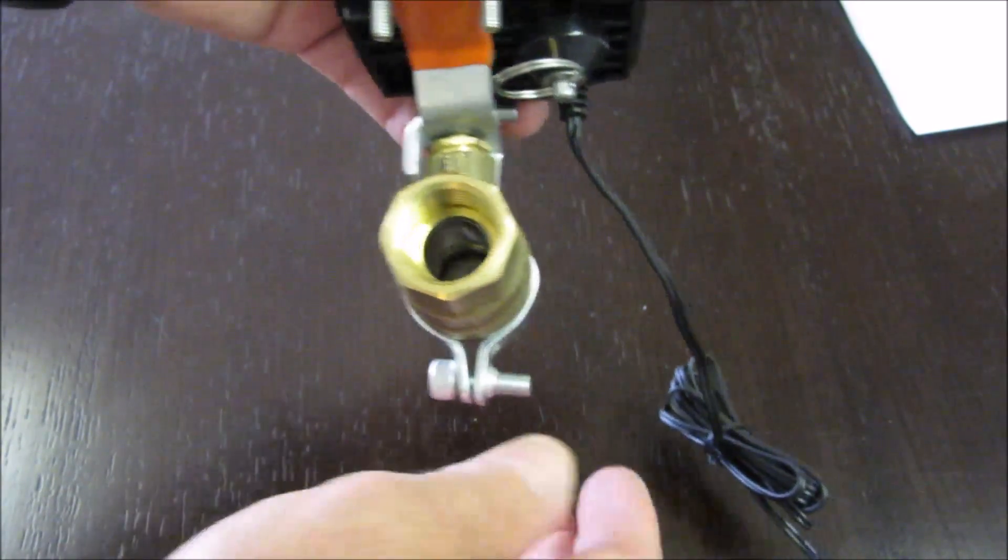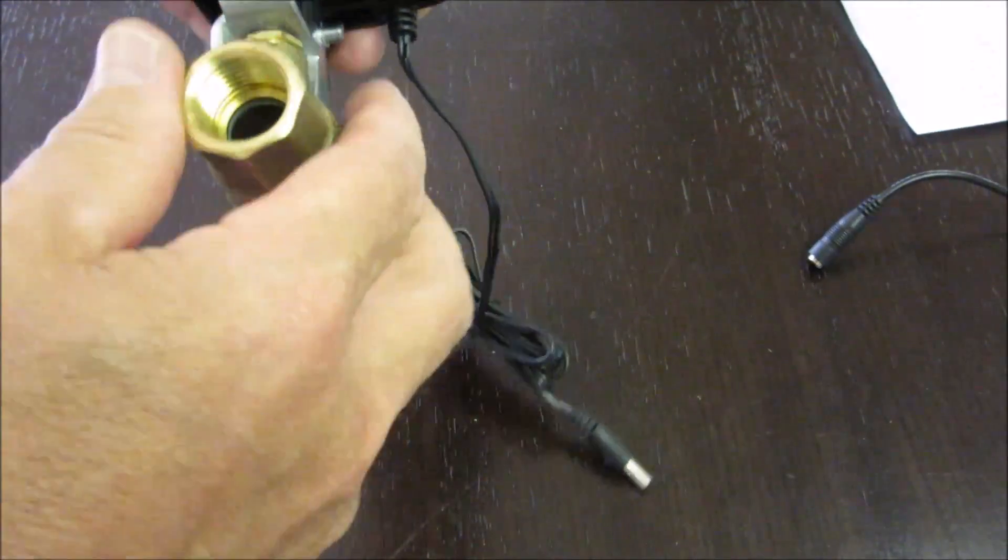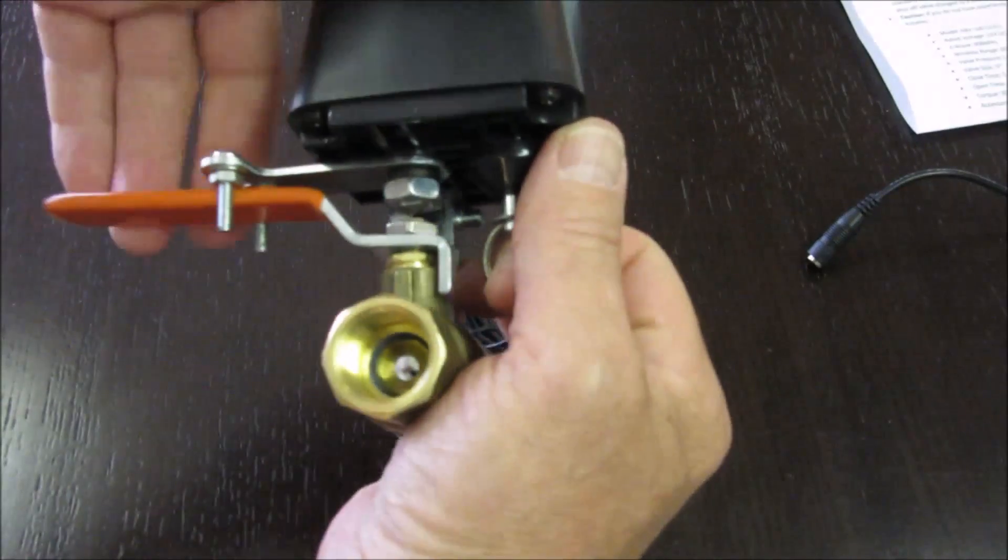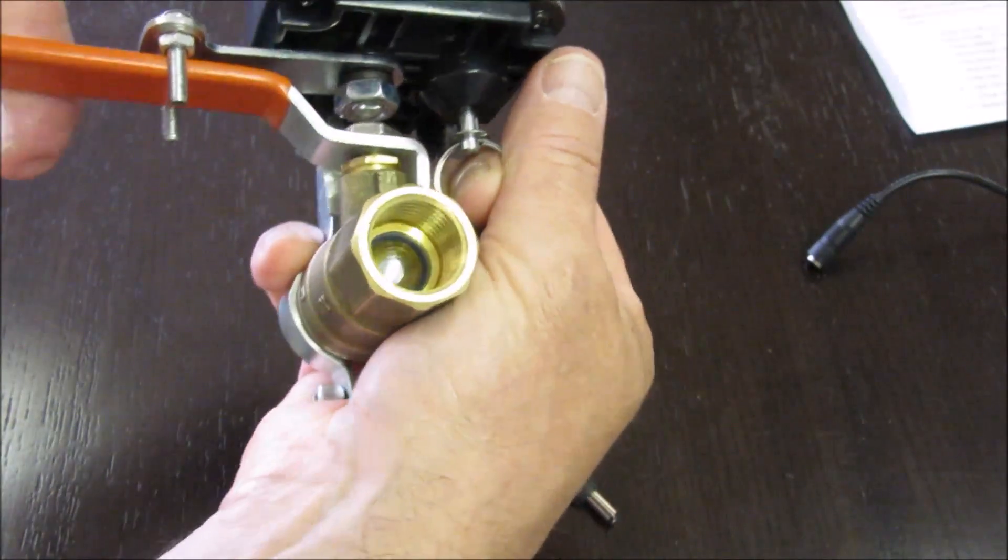If for some reason you lose power and you want to operate it manually, you can just unplug it and pull the clutch. Hold the clutch open and just move it manually, as you can see here.